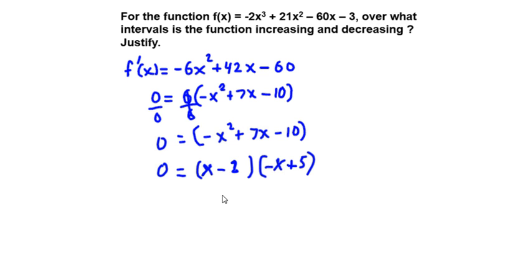Using the zero-factor property, we have x - 2 = 0 and -x + 5 = 0. Then we have x = 2, and if we add x to each side here, we have x = 5.